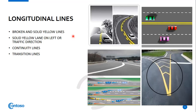Another longitudinal line is the broken and solid yellow line combination. You will see both a broken side and a solid side. Overtaking is permitted on the side of the broken line, but not on the side of the solid line. So the driver on the broken-line side may overtake, while the driver on the solid-line side may not.